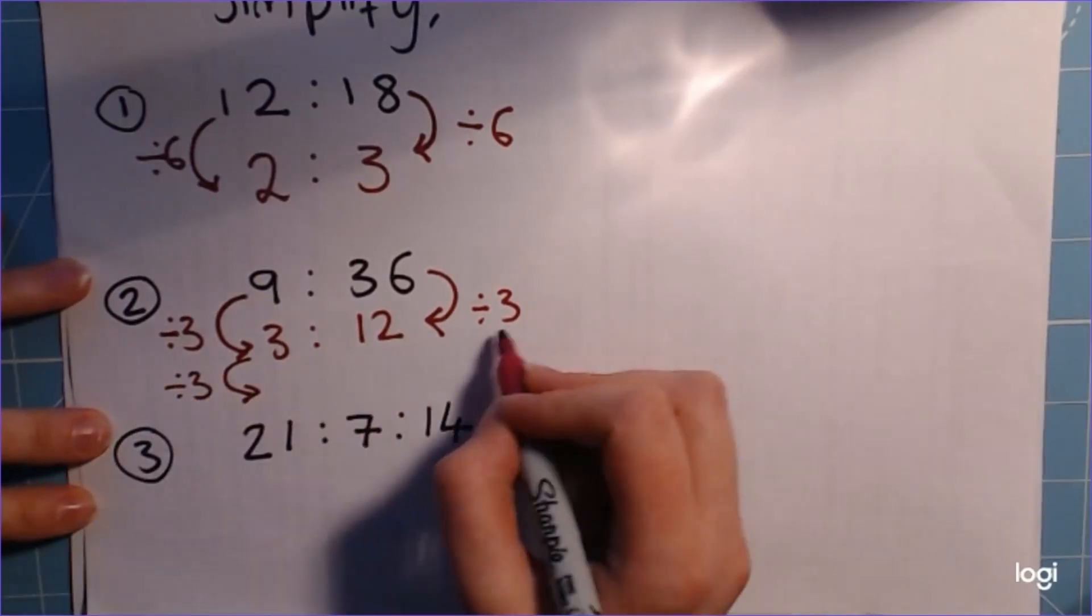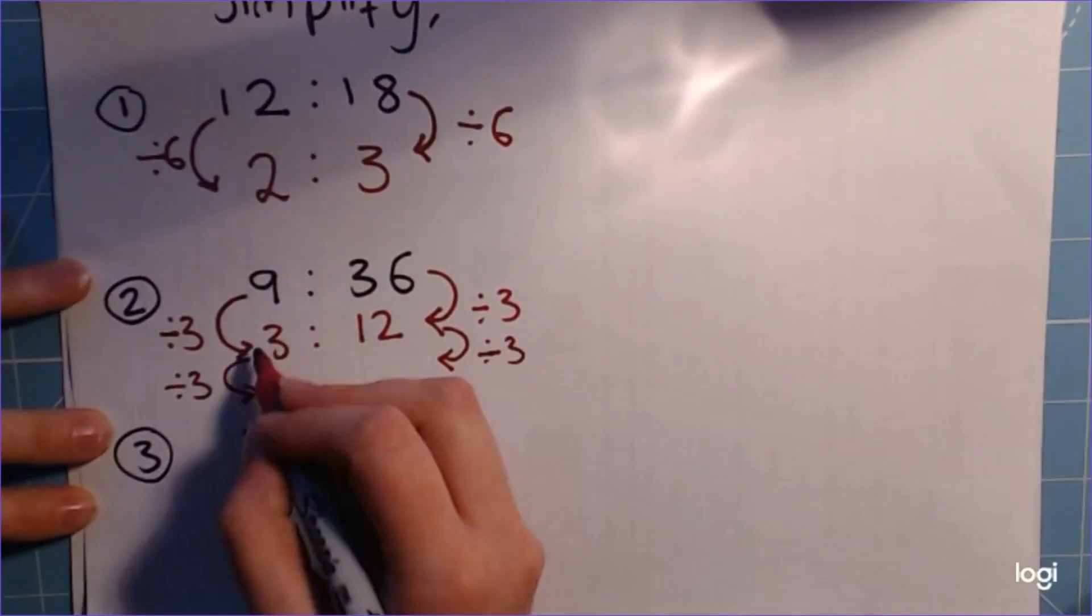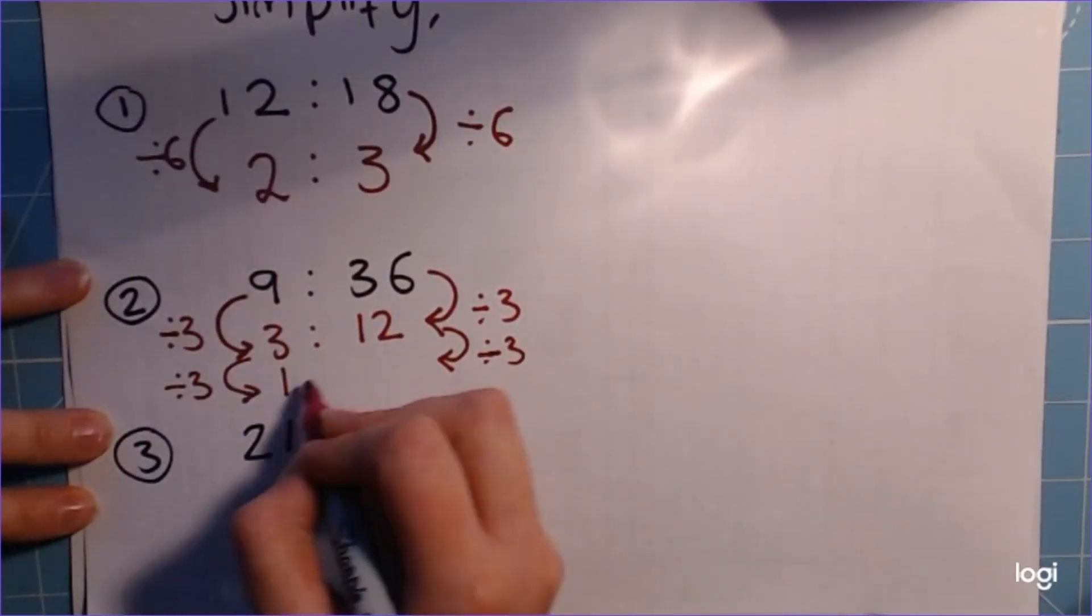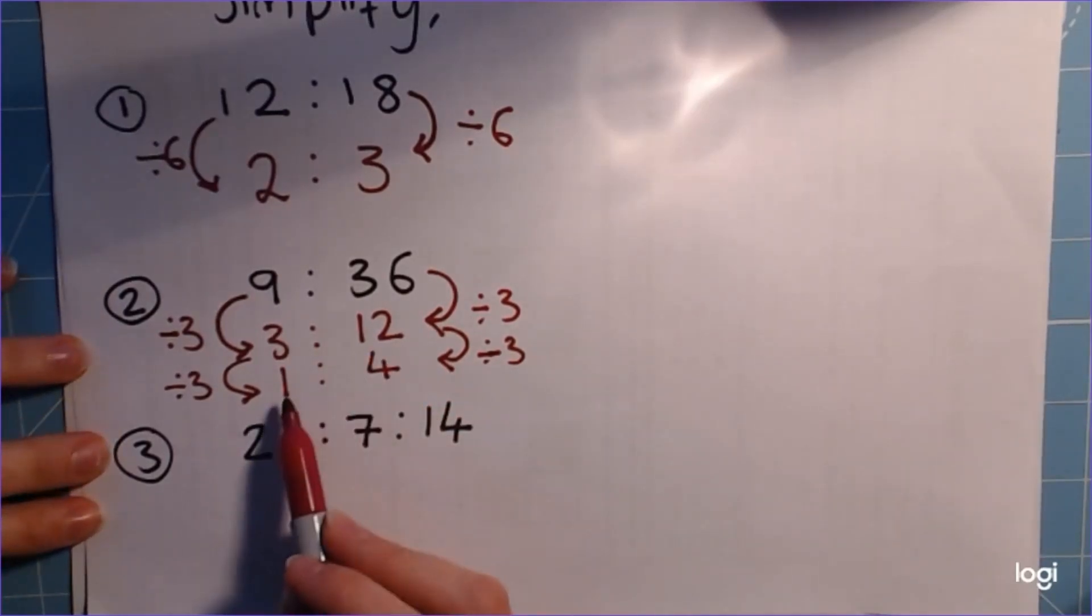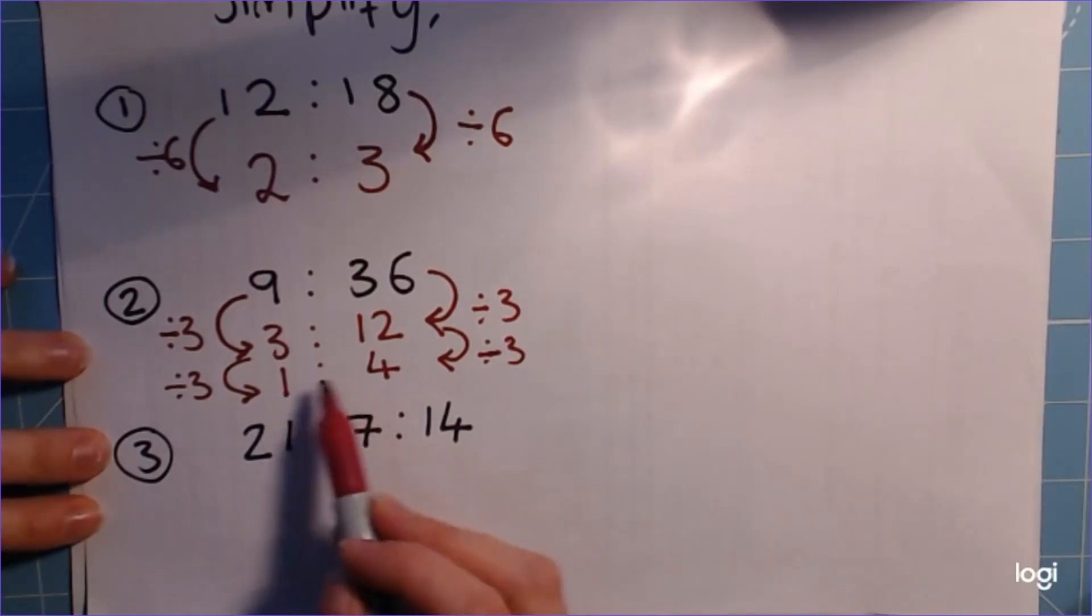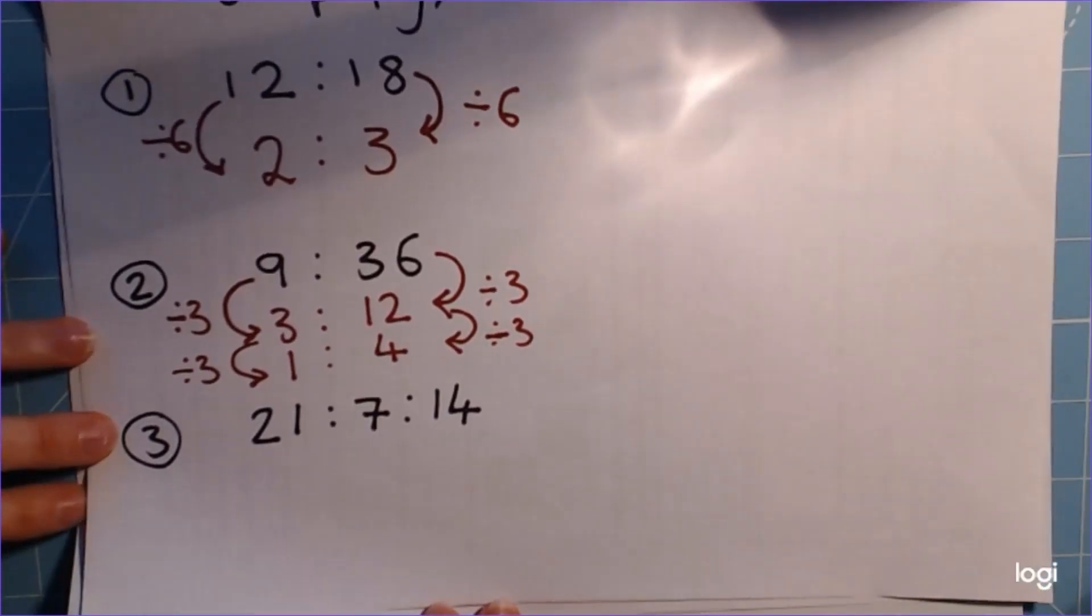Divide by 3, divide by 3, which gives 3 divided by 3 is 1, 12 divided by 3 is 4. And we can't go any further because we could divide by 1, but it wouldn't make any difference. We'd end up with 1 to 4 still, so it wouldn't simplify it any further.